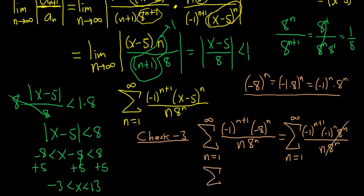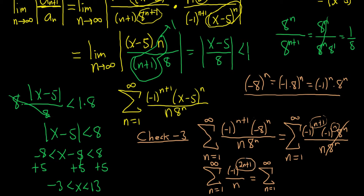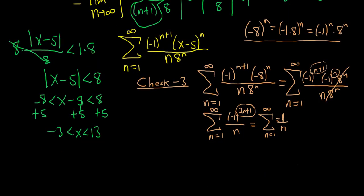This equals the sum from n=1 to infinity of negative 1 to the n+1 times negative 1 to the n, over n. Adding the exponents gives negative 1 to the 2n+1, since n+1+n = 2n+1. Now 2n+1 is always odd no matter what, so negative 1 to an odd power is always negative 1. Ignoring the negative 1, it's just a p-series, and this is a divergent p-series — so this diverges.